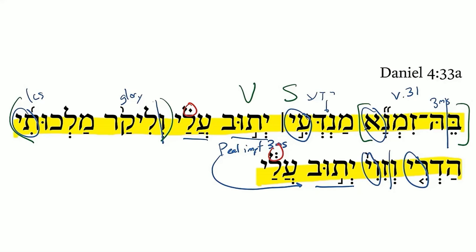Daniel 4:33a, the second part, talking about the grammatical and syntactical structure leading up to the first zaqef katon. The first verbal clause is subject-verb, and the second is also subject-verb, but we need to take a closer look.